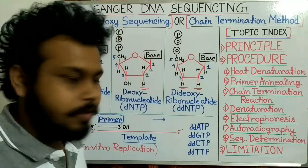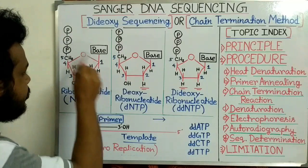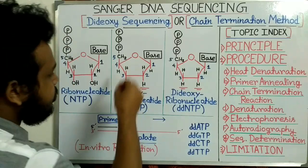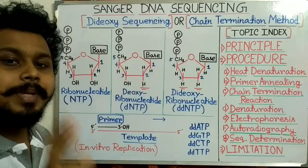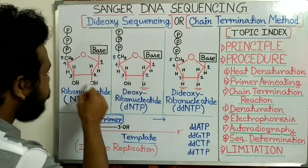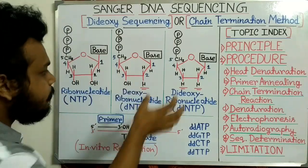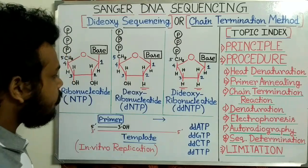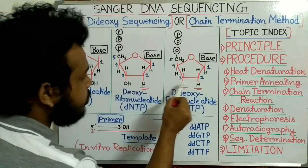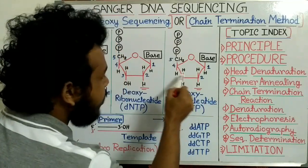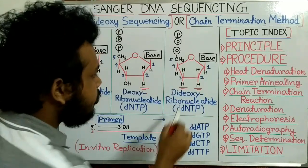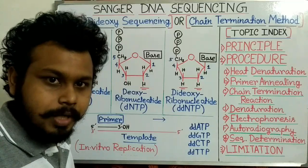Now let's talk about the whole principle of Sanger DNA Sequencing. Here we can see the ribonucleotide structure present in RNA, and this is the Deoxyribonucleotide structure present in DNA. The difference is at the 2' position — the OH group is missing and replaced by a Hydrogen. In Dideoxyribonucleotides, both the 2' and 3' OH groups are missing and replaced by Hydrogen.